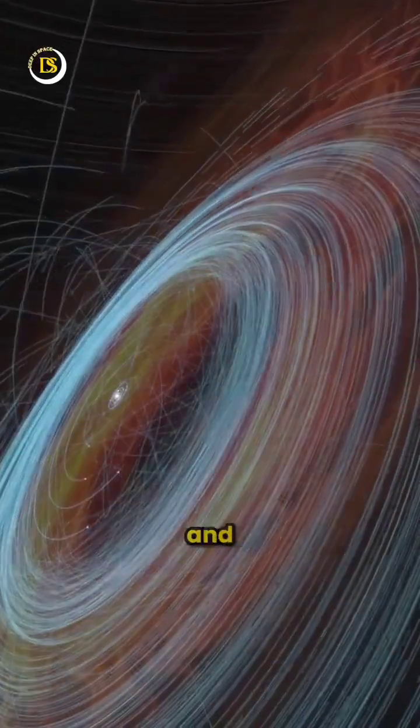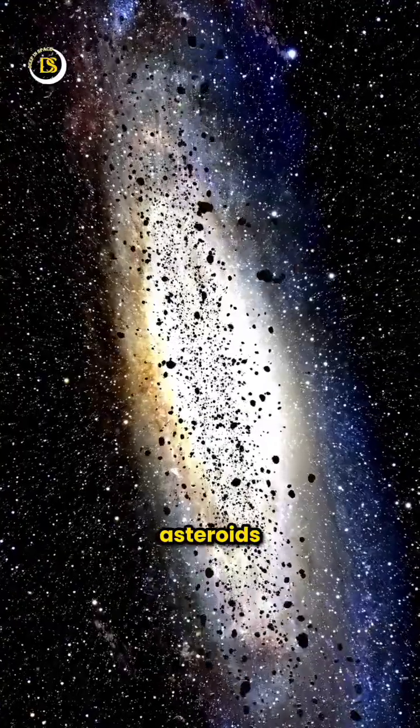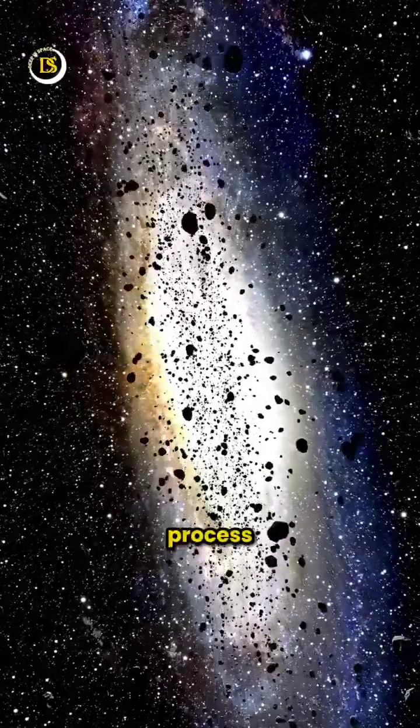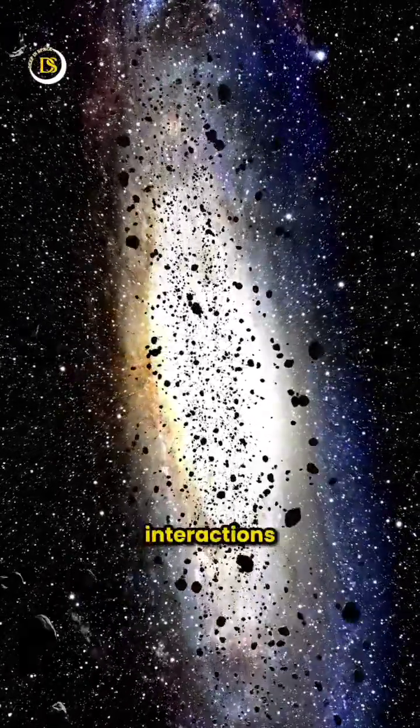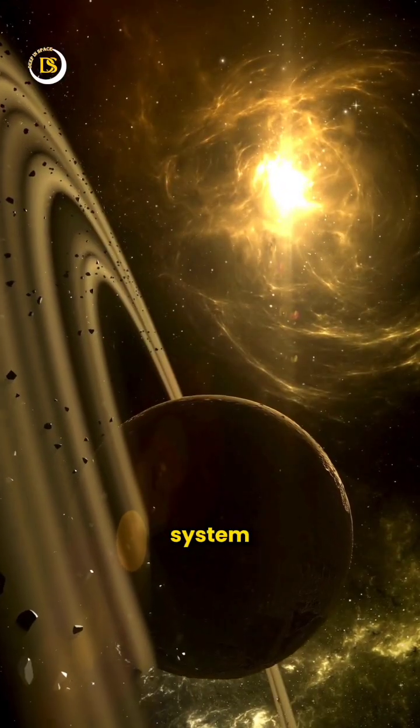These planetesimals further collided and merged to form planets, moons, asteroids, and comets. This process of accretion and gravitational interactions over millions of years led to the diverse celestial bodies we observe in our solar system today.